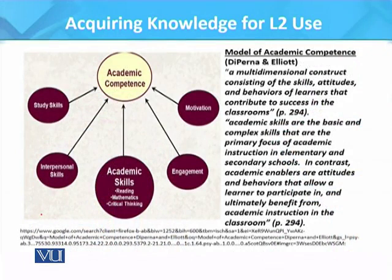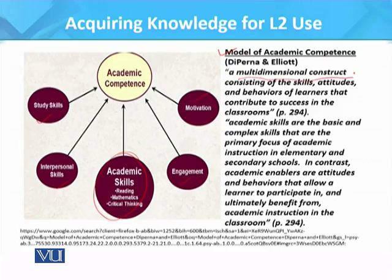Deeperna and Iliant developed a model of academic competence. It consists of study skills, interpersonal skills, academic skills, motivation, and engagement. They defined academic competence as a multi-dimensional construct — a construct which has many levels, many dimensions, and consists of skills, attitudes, and behaviour of learners that contribute to success in the classroom.